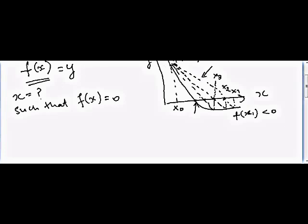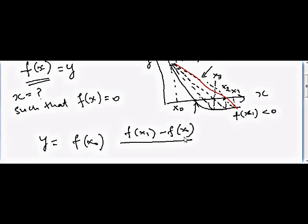Can be written as y is equal to f of x zero plus (f of x one minus f of x zero) divided by (x one minus x zero), so this is the slope, times (x minus x zero).